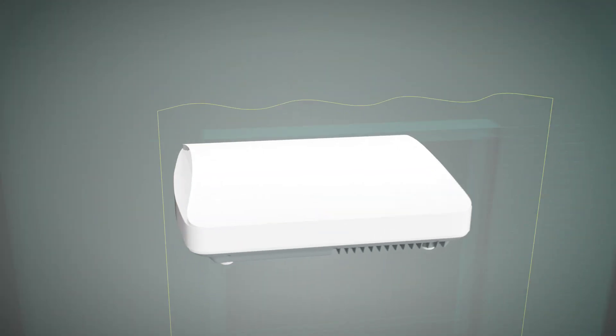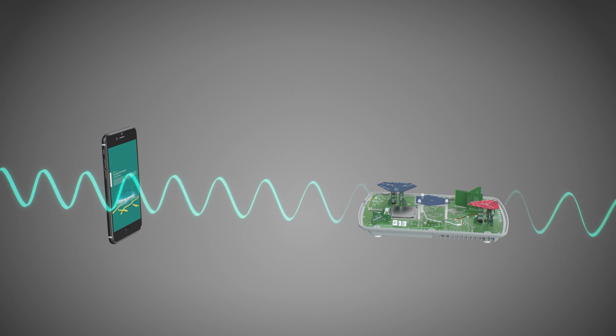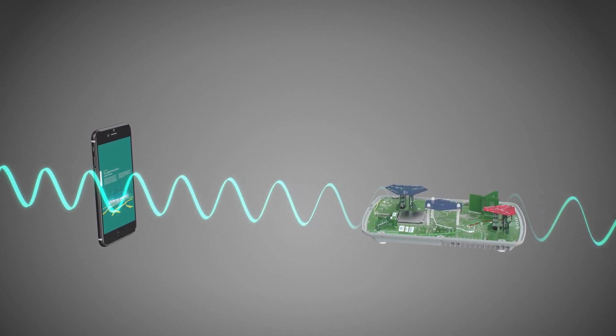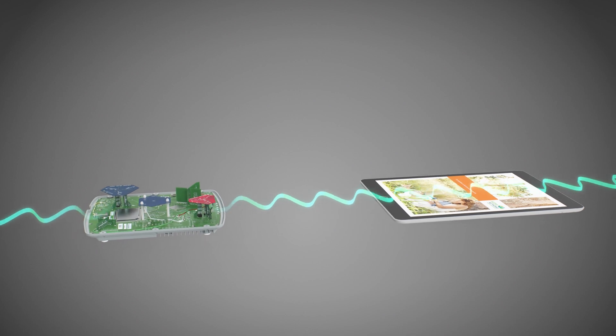BeamFlex Plus is particularly advantageous for smartphones, tablets, and other handheld devices that are constantly moving. The result is higher signal strength and a better experience for homeowners and the devices they use, regardless of orientation.